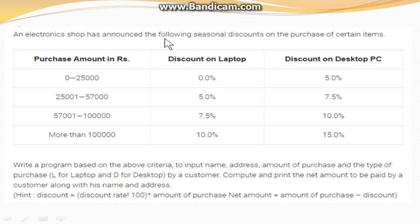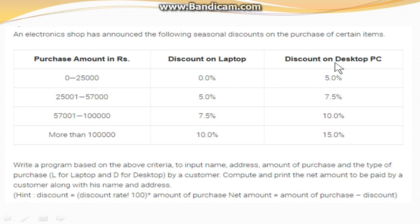An electronic shop has announced the following seasonal discounts on the purchase of certain items. You have two items — laptop and desktop — and a table with some criteria. The left-hand side shows purchase amount ranges, and for each range you have a discount percentage for laptop separately and for desktop separately. You also have to accept a type of purchase: L for laptop and D for desktop, and check the discount conditions accordingly.